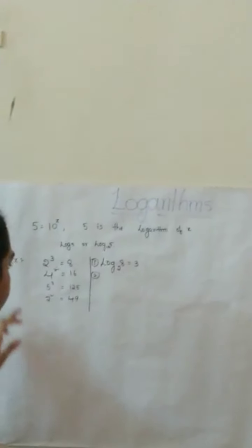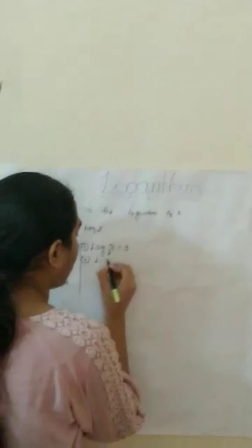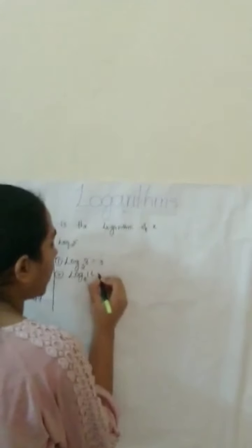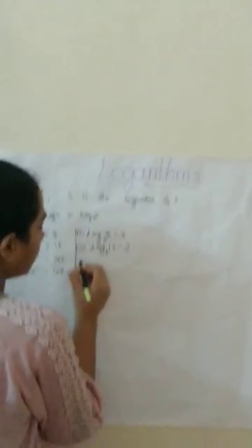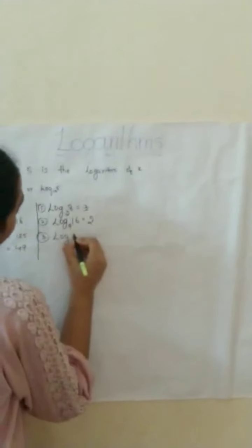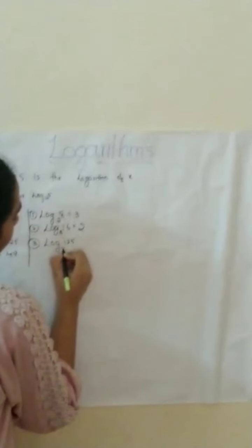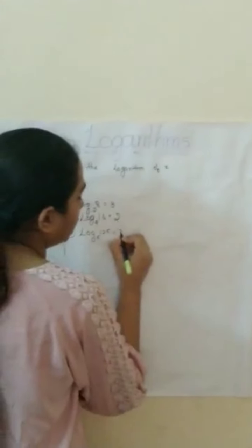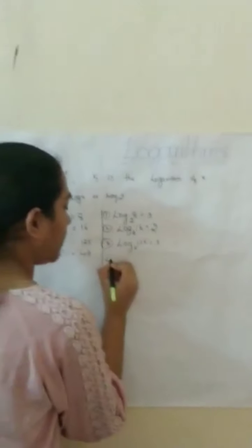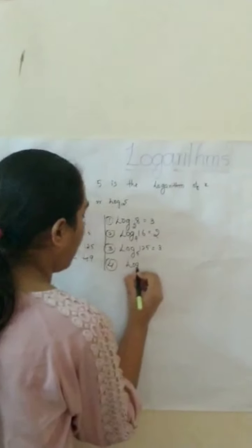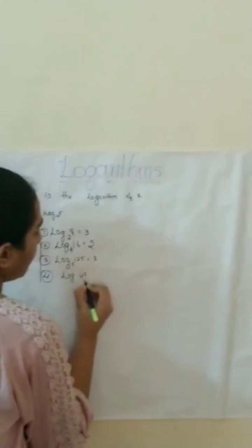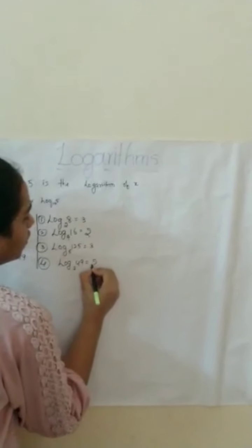Second one: 4 square equals 16, so log 16 base 4 equals 2. Third one: log 125 base 5 equals 3. Fourth one: log 49 base 7 equals 2.